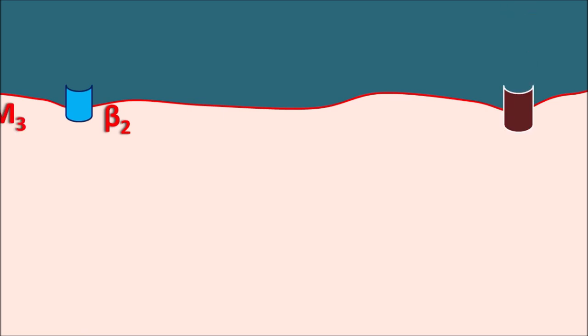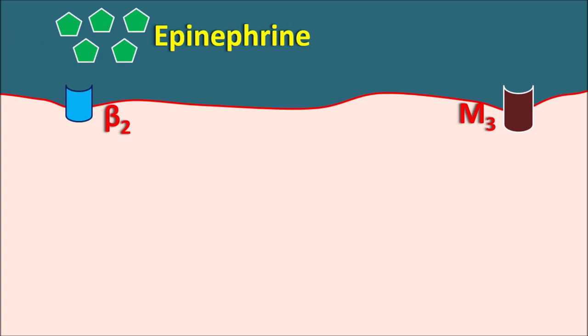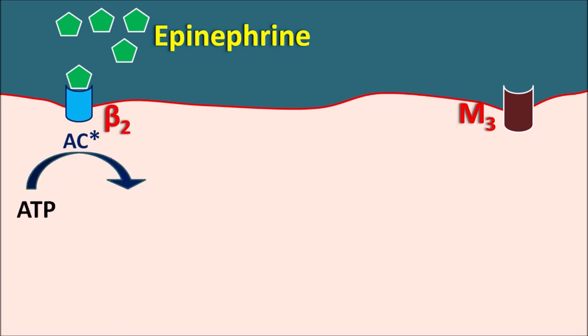On the bronchial cells, two important types of receptors are present. One is the beta-2 receptors, on which the sympathetic neurotransmitter epinephrine can act. Another type is the M3 receptors, on which acetylcholine can act. Epinephrine is a circulating hormone that binds to beta-2 receptors present on the bronchioles. These beta-2 receptors are G protein-coupled receptors, and their activation results in activation of the adenylyl cyclase system, which converts ATP into cyclic AMP.